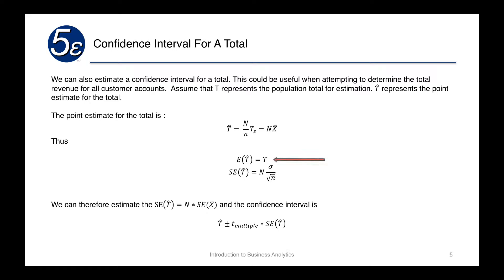Thus, our expected value for T hat is going to equal T. So our expected value of the point estimate should be the actual total. Our standard error for T hat is going to be equal to N, which is our total observations, times the population standard deviation divided by the square root of N.